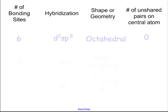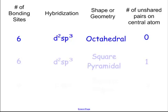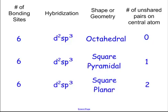We also have when we have six bonding sites, and we call that D²SP³. Sometimes you'll see it as SP³D². It doesn't matter which way you write it, whether it's SP³D² or D²SP³. It doesn't matter. And if there's zero unshared pairs, we call that an octahedral. If there's one unshared pair, we call that a square pyramid. If there's two unshared pairs, we call it a square planar.